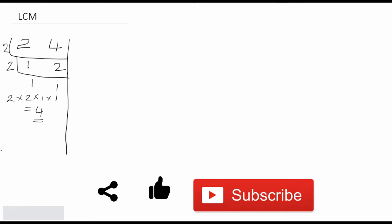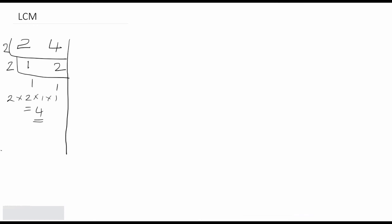In this video I would like to explain a method which is a bit different. Let us see an example — how to find LCM using this method. Let us take four and twelve. First, you must check if the two numbers are equal. If they are equal, that is the LCM. If they are not equal, find the smallest number among the two, which is four. Add four to four, so now we have eight and twelve.